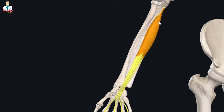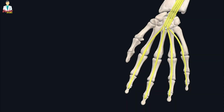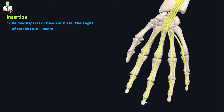After origin, the muscle fibers travel inferiorly towards the hand and just like its fellow muscle, the flexor digitorum superficialis, this muscle also divides into four tendons at the level of the wrist joint. These four tendons travel inferiorly towards the digits and insert onto the palmar aspects of the bases of the distal phalanges of the medial four fingers — that is the index, middle, ring, and little fingers.